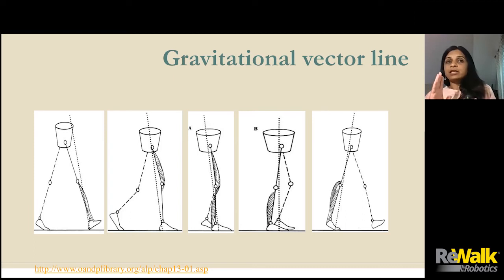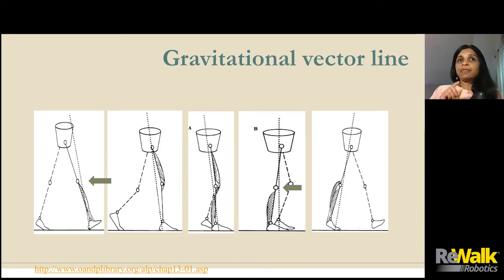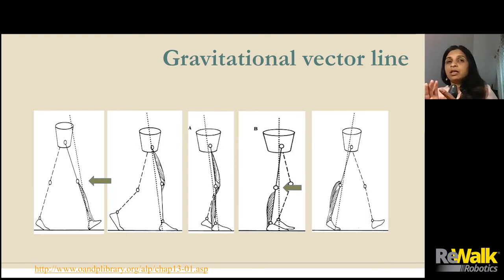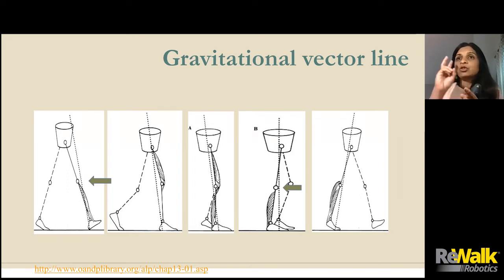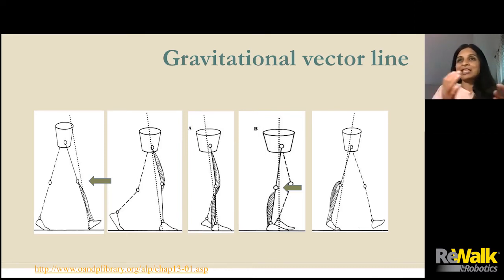When we get into the loading phase, because our weight is going forward, the gravitational vector line is now falling behind our knee joint and at our hip joint. This causes the knee to get into a little bit of flexion. When we get to mid-stance, the gravitational vector line goes behind the hip joint, so we get passive hip extension. It's still behind the knee joint, so we still have about one or two degrees of flexion. From loading phase — where we had about five degrees of knee flexion — to mid-stance, where we have one or two degrees, that little flexion is our shock absorption.